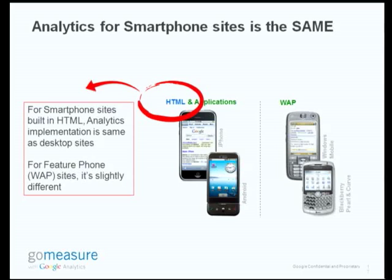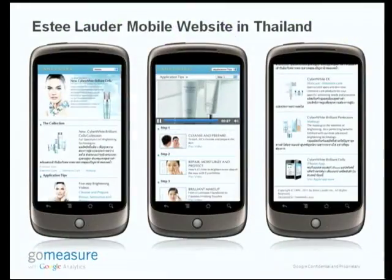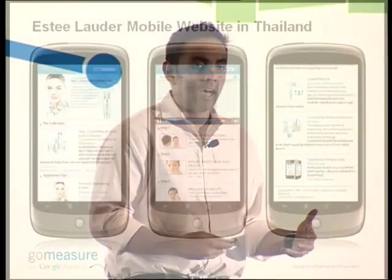Let's look at a case with Estee Lauder. Analytics for smartphone sites — Estee Lauder built a smartphone site, built in HTML, and for smartphone sites it's the same exact analytics integration. For feature phones it's slightly different. With this Estee Lauder case, they built an iPhone and Android-optimized site that hosted videos with a link to their app, and that really showcased their skincare product line in a rich environment that drew the user in from the smartphone.